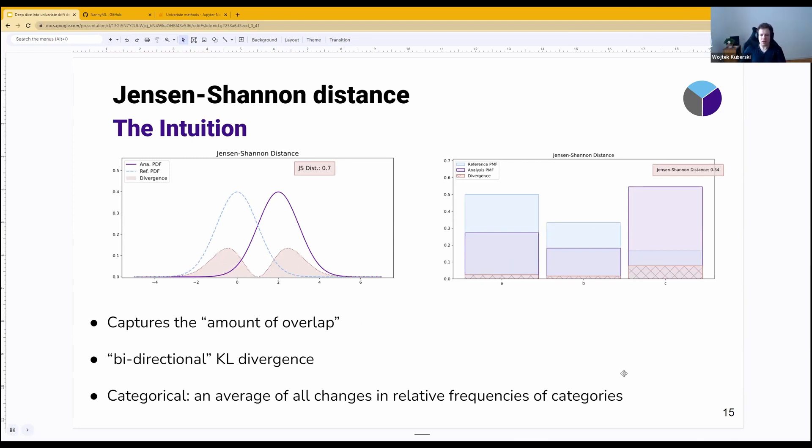And the same here, except in categorical features, we have an even nicer and more direct way of quantifying what it actually is. It is the average of all changes in the relative frequencies of categories. So we're looking at the relative frequencies of categories, and we are looking at the average of all changes between A and B, B and C, et cetera.